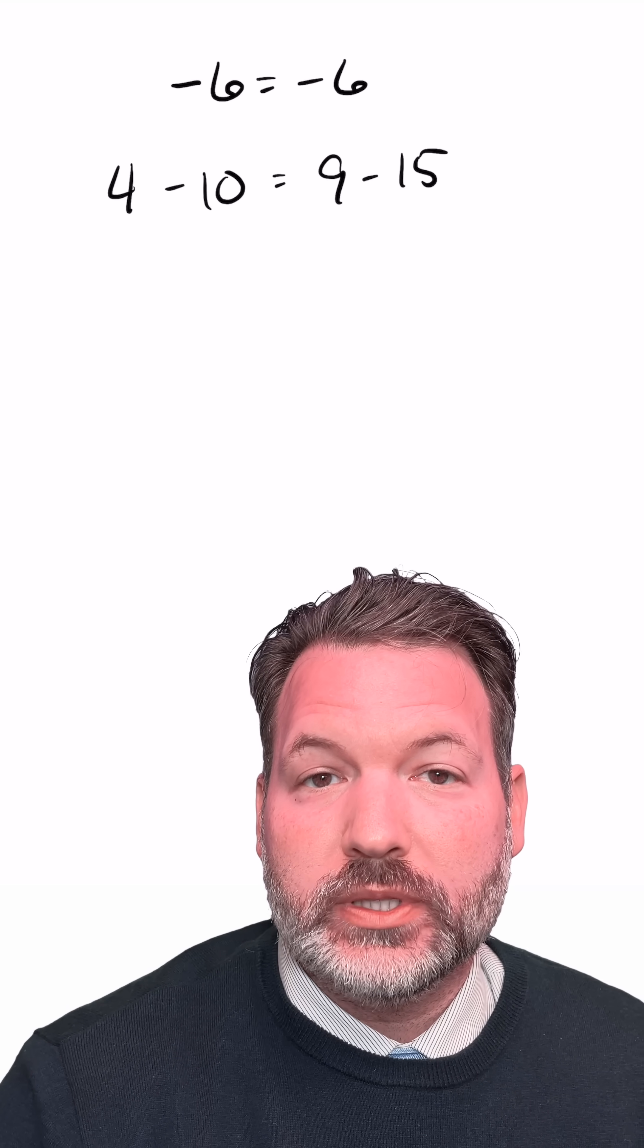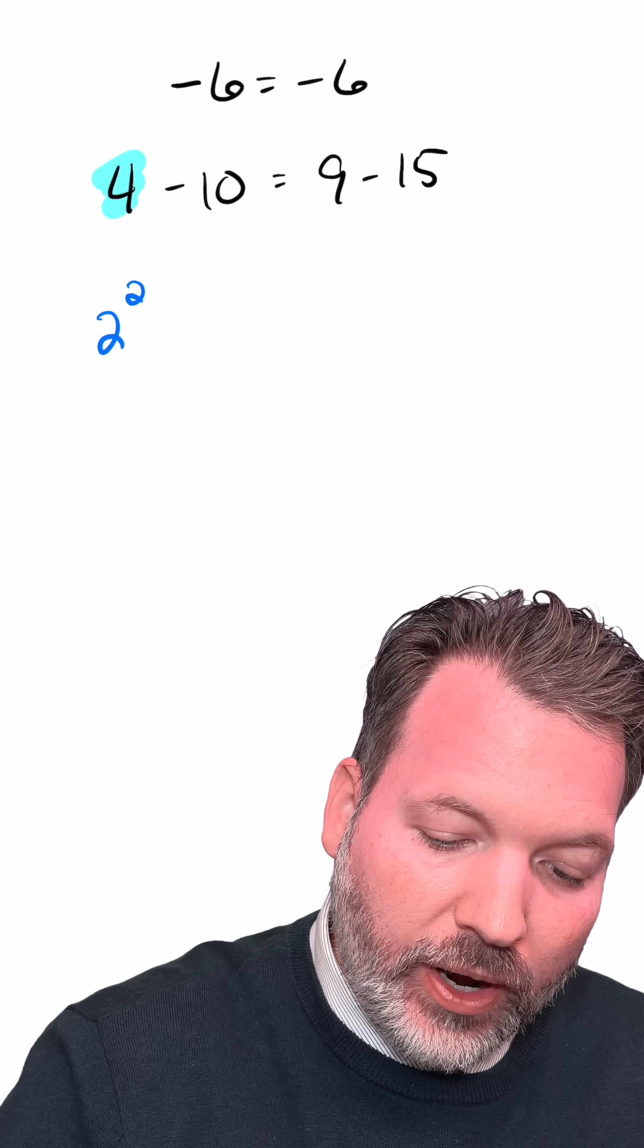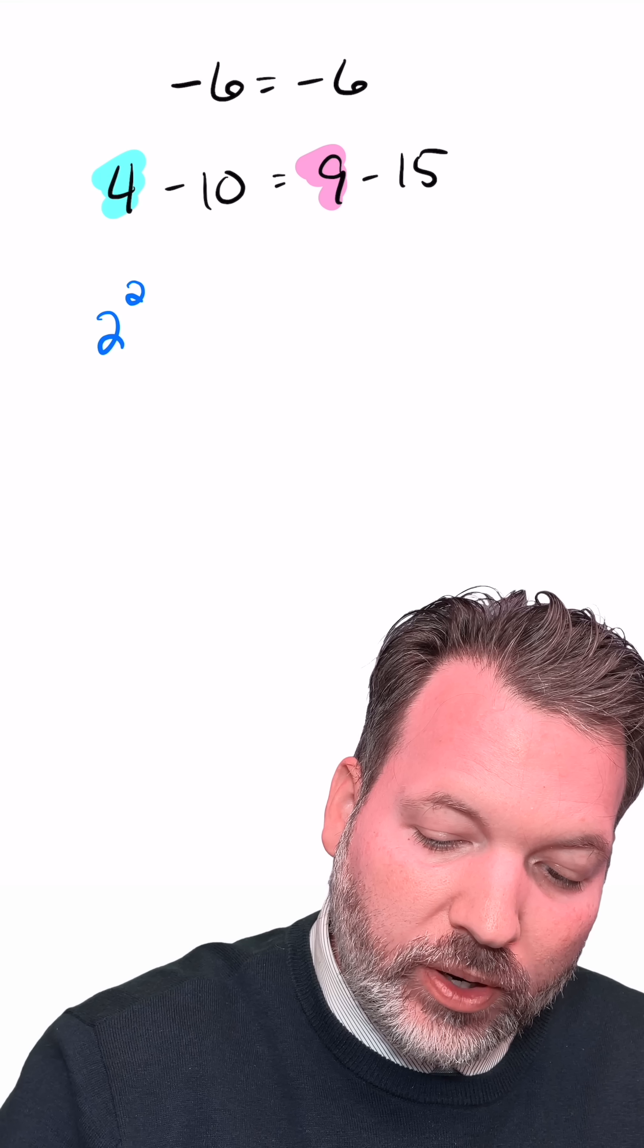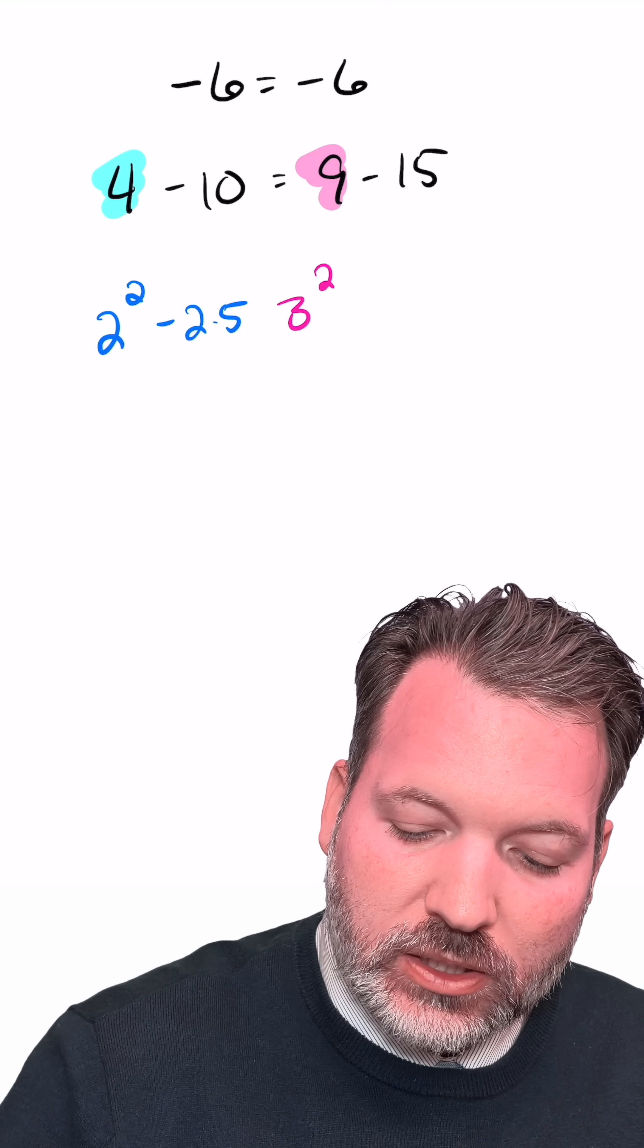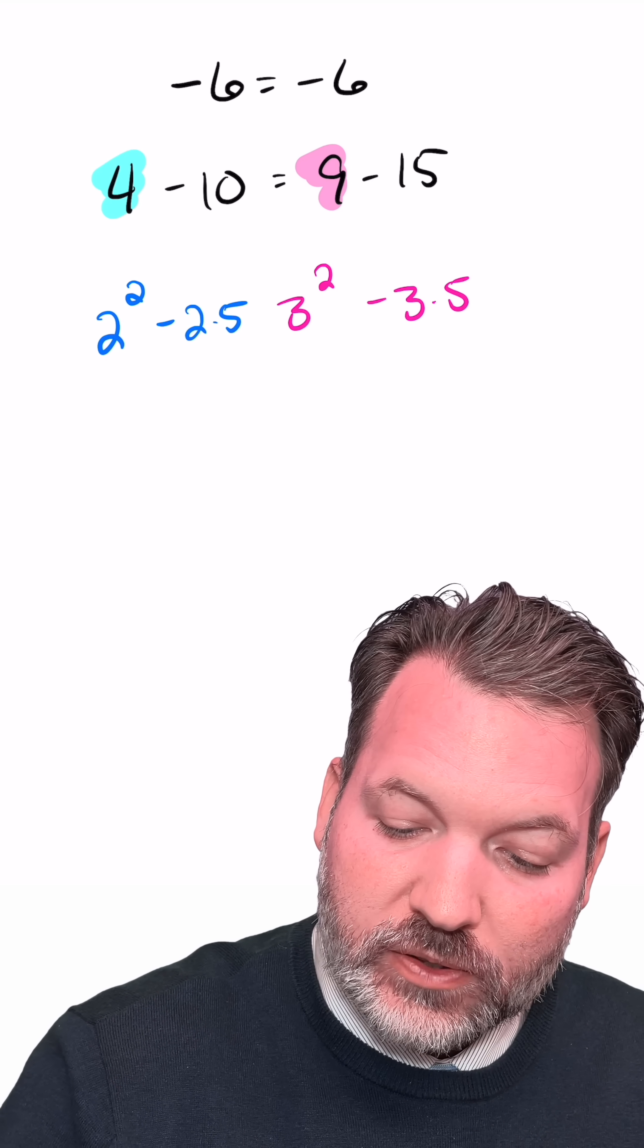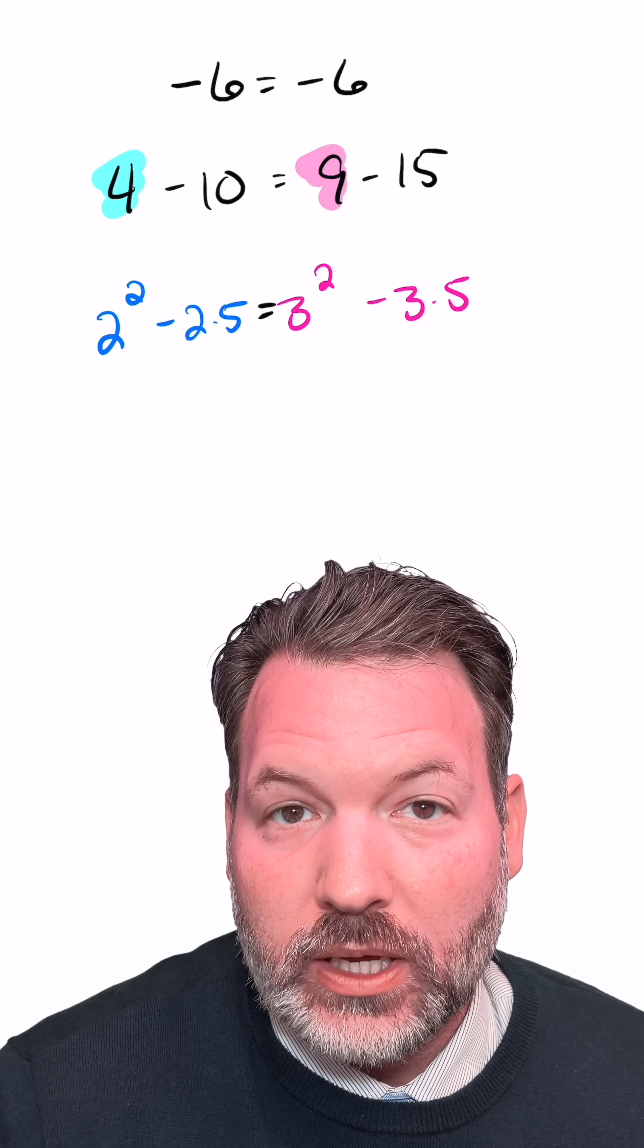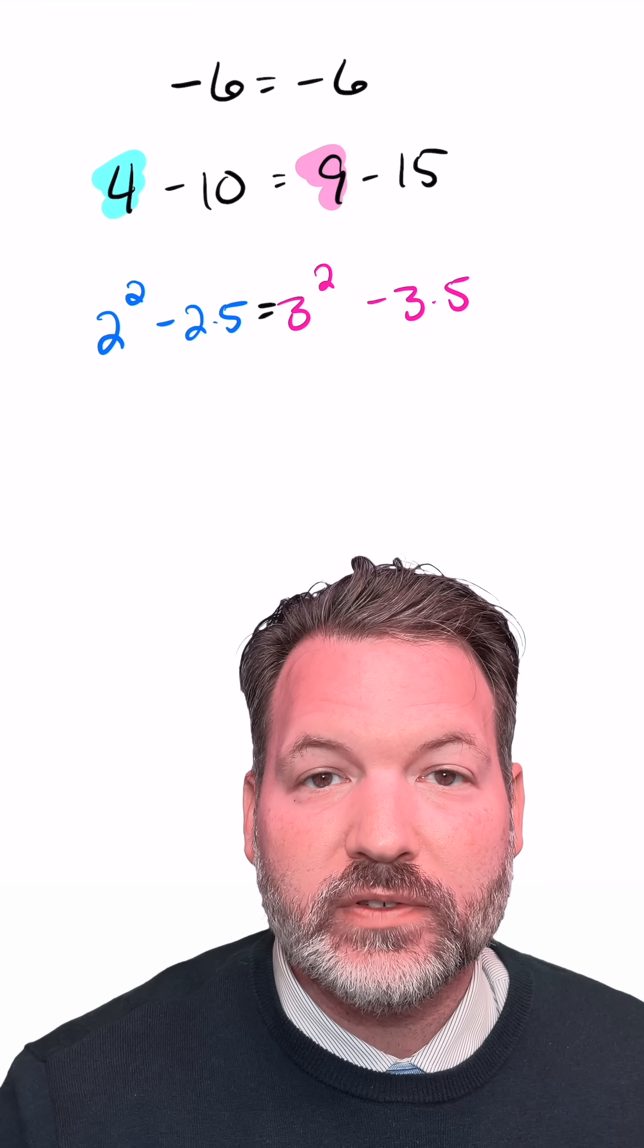This is still negative 6 equals negative 6. This 4 now, we're going to rewrite as 2 squared, and this 9 we're going to rewrite as 3 squared. The 10, on the other hand, we're going to rewrite as 2 times 5, and the 15 we're going to rewrite as 3 times 5. But fundamentally, these expressions are still equal. It's still just a way to write negative 6 equals negative 6.